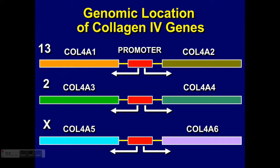These different chains, or actually their genes, are placed on different chromosomes: chromosome 13, 2, and X. So you can actually imagine that different defects would result in different types of inheritance, from autosomal dominant and recessive to X-linked if you have defects in alpha 5 chains.